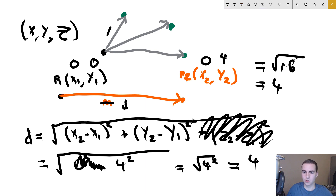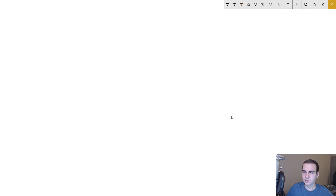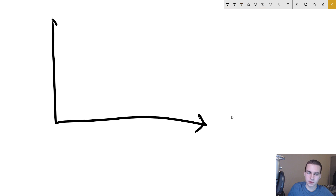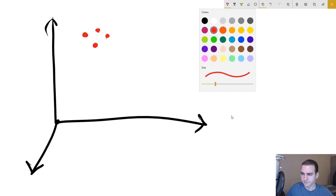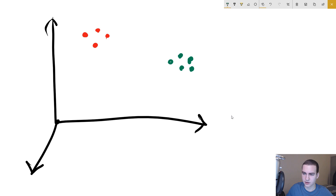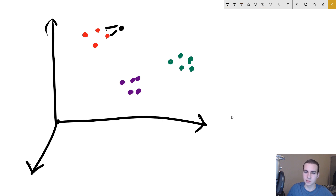Now that we can find distances between all different points, we can determine which are the closest neighbors. Let's do an example in three-dimensional space, since in our dataset we'll have six features, meaning our data points need to be plotted in three dimensions. Instead of just (x, y), we have (x, y, z) coordinates. The algorithm works the same way — we compare distances to determine which neighbors are closest.